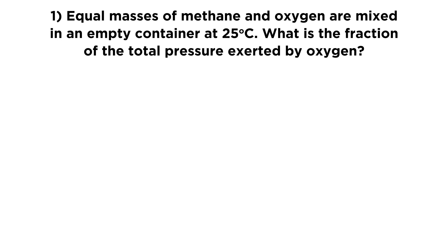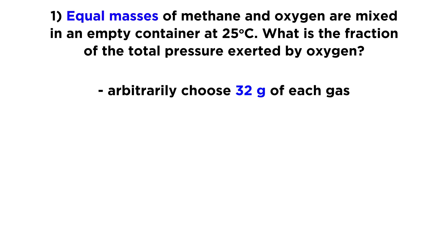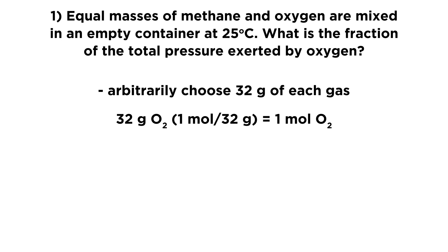For this first one, it specifies that we have equal masses of methane and oxygen. In this kind of case, it might be useful to just go ahead and assume an arbitrary mass. Let's arbitrarily choose 32 grams of each gas — you could choose any number you like. Moles are going to tell us something about the total pressure, so let's convert our gram values into moles.